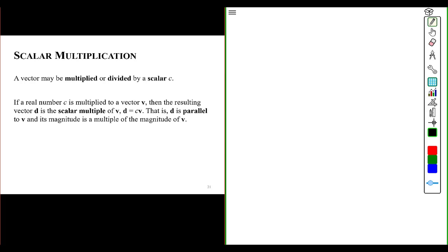A vector may be multiplied or divided by a scalar c. If a real number c is multiplied to a vector v, then the resulting vector d is the scalar multiple of v, d equals cv. That is, vector d is parallel to v and its magnitude is a multiple of the magnitude of v.